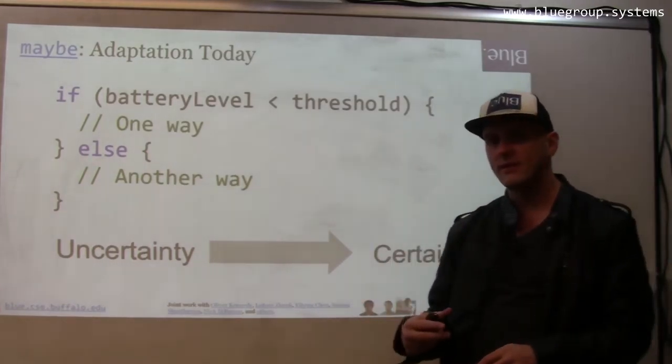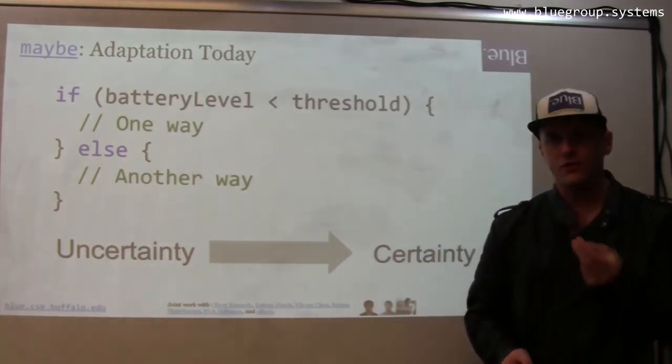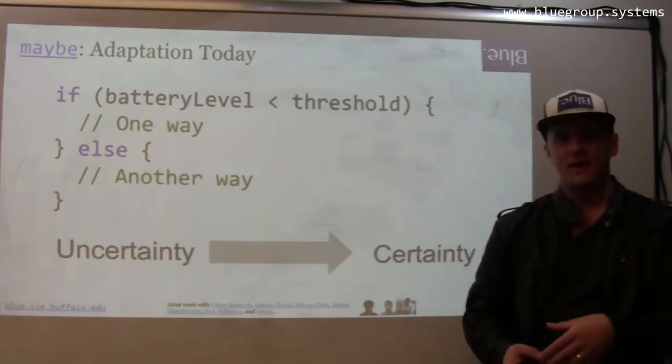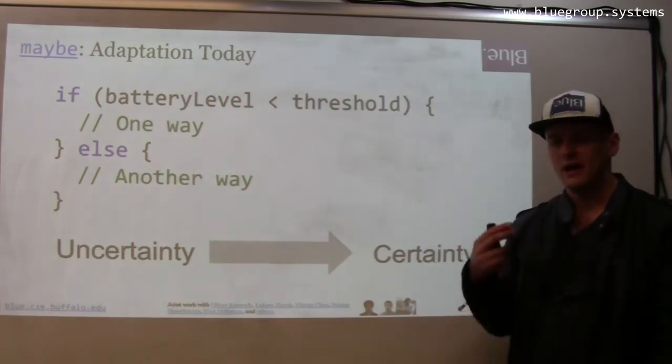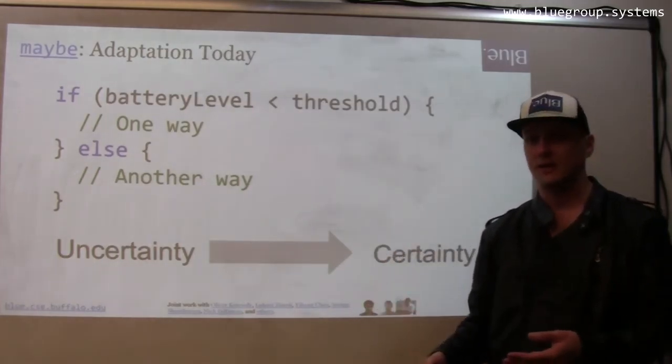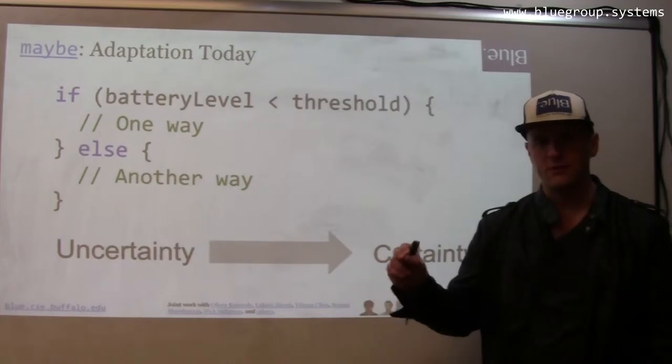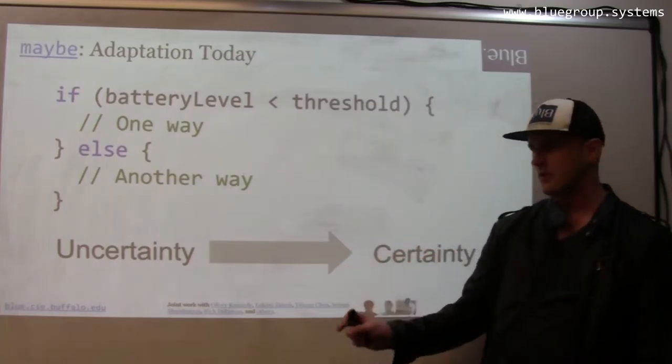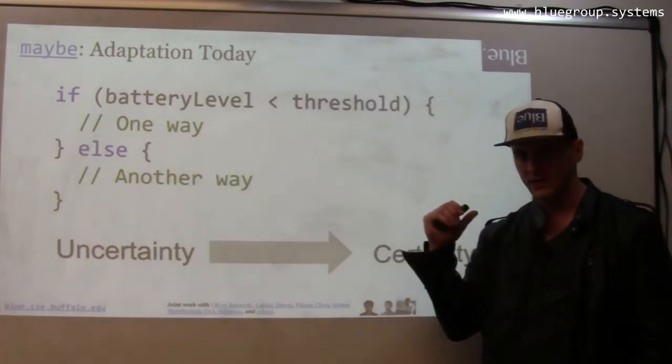And the reason is because they have to write certain code. Code has this deterministic property to it, and the code that I'm going to run has to have that property, even if it's trying to make complicated decisions. And so what I'm forcing the developers to do is very difficult. I'm forcing them to convert uncertainty to certainty.